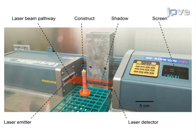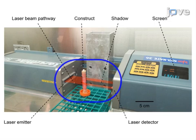Every hour for the first 12 hours and every 24 hours thereafter, remove the construct from the culture medium under sterile conditions and place it orthogonally in the path of a scanning laser interferometer to measure the construct's thickness.